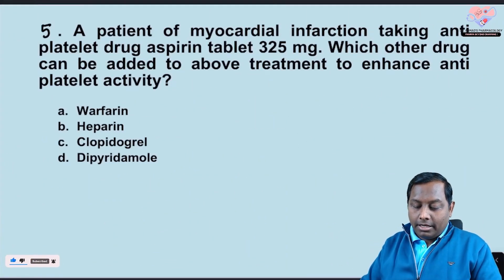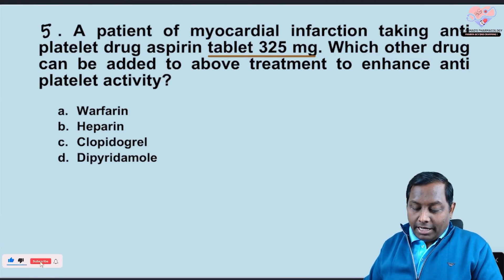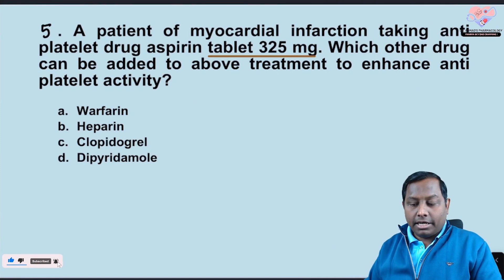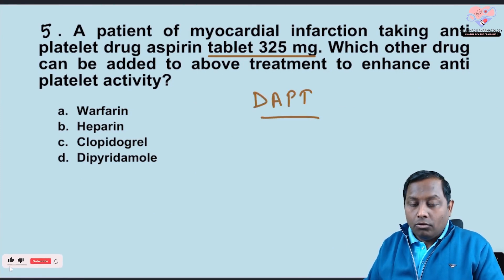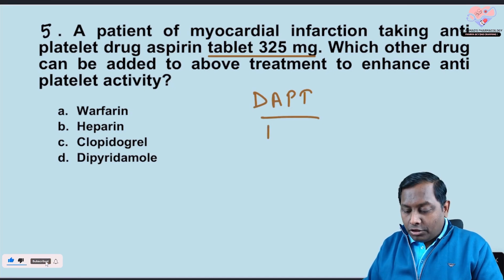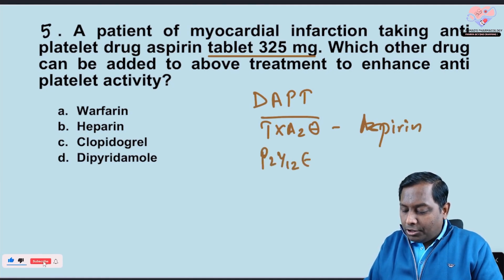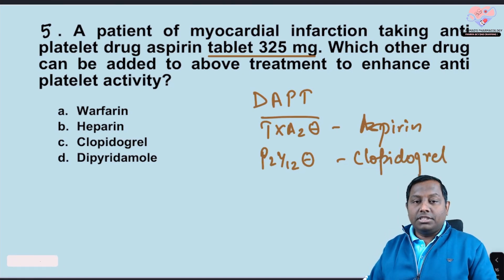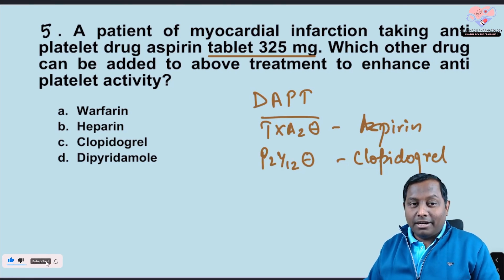Once again: a patient with myocardial infarction taking antiplatelet drug aspirin 325 mg — which drug can be added to enhance the antiplatelet activity? In dual antiplatelet therapy, we use a thromboxane A2 inhibitor — aspirin — along with a P2Y12 inhibitor. The P2Y12 inhibitor here is clopidogrel. This dual antiplatelet therapy has better outcomes compared to any single antiplatelet drug.